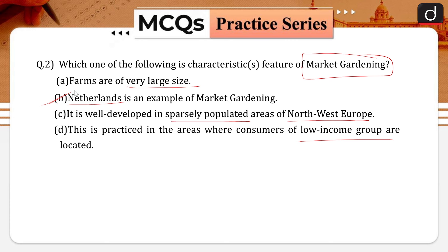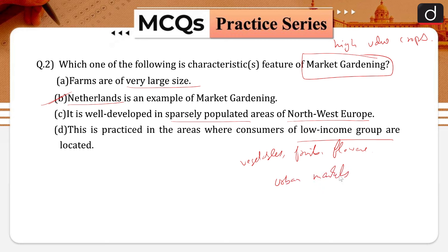What is market gardening? Market gardening specializes in the cultivation of high-value crops such as vegetables, fruits, and flowers for the urban market. Farms are small in size and are located where there are good transportation links with urban centers where a high-income group of consumers is located. Therefore, option A — farms are of very large size — is wrong.